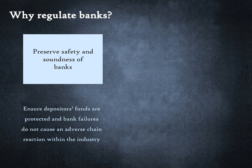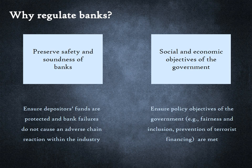Second, the government uses the banking system to achieve social and economic objectives. Regulation may be used to promote positives — for example, financial inclusion or green energy transition — or prevent negatives, like financing of crimes.